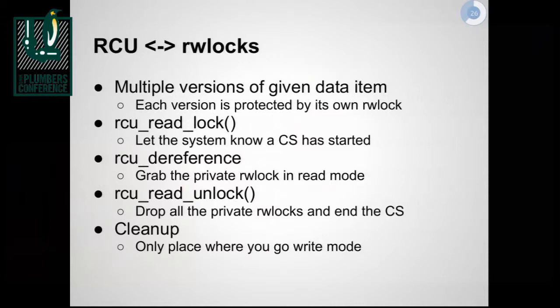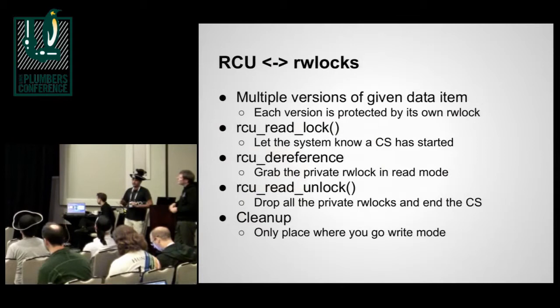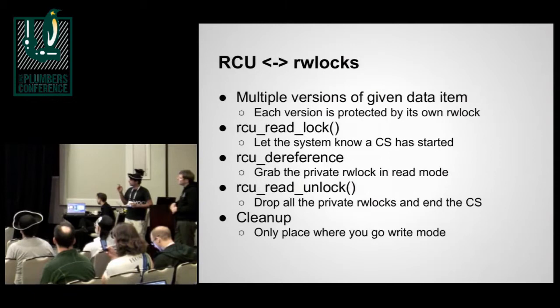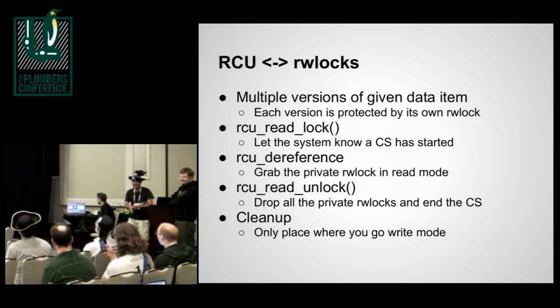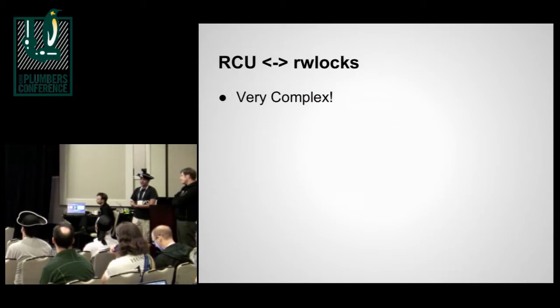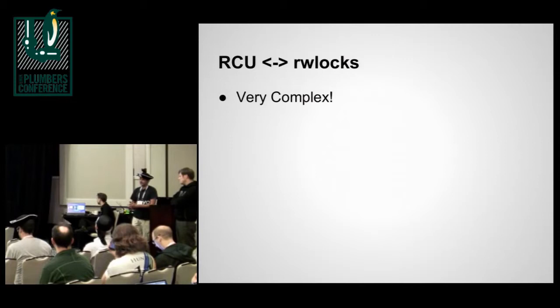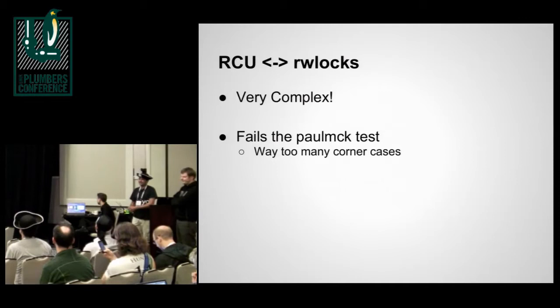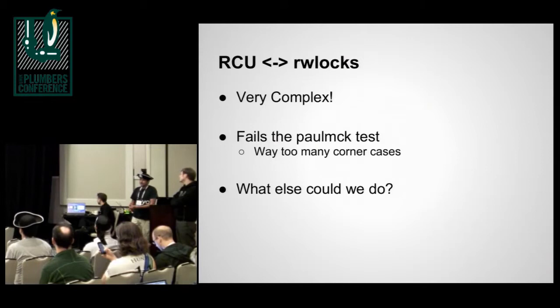Paul has a few objections to that approach. The problem was that it's a pretty complicated conversion requiring a lot of changes, and the magical instantiation of an RW lock is not as straightforward as we think. It also failed the Paul McKinney test — he kept coming up with too many corner cases, requiring special cases throughout. That made us think about what else we could do.